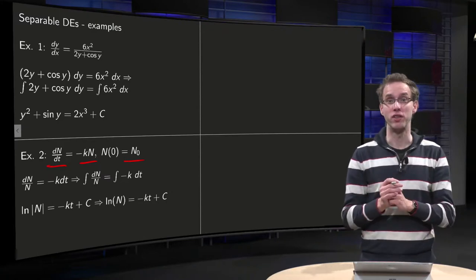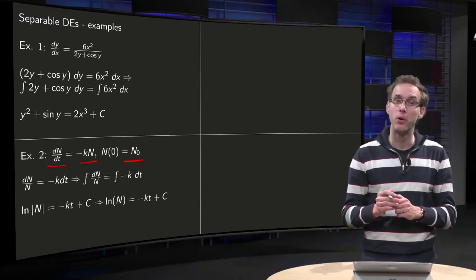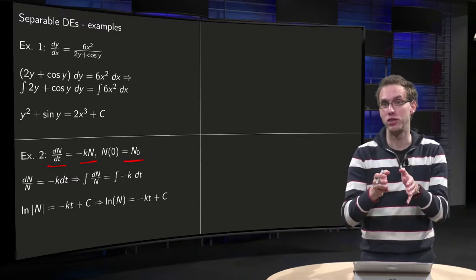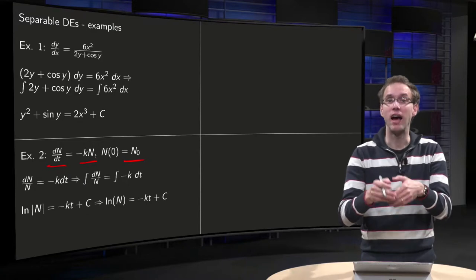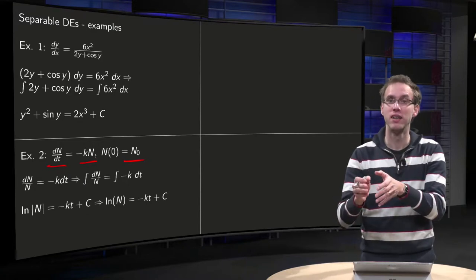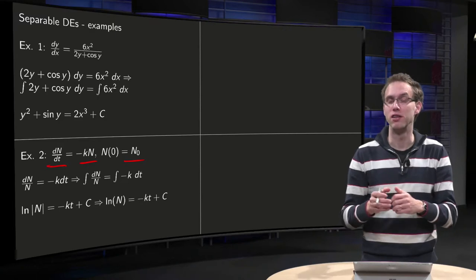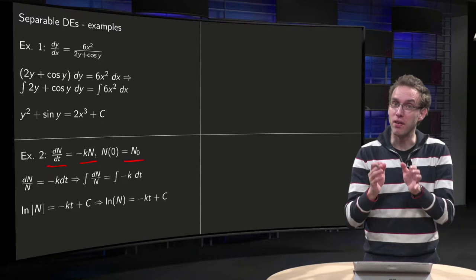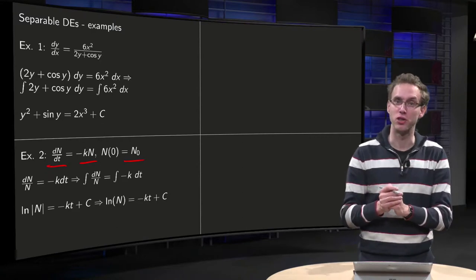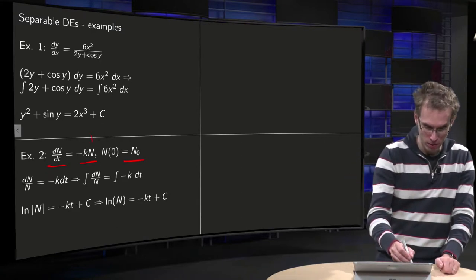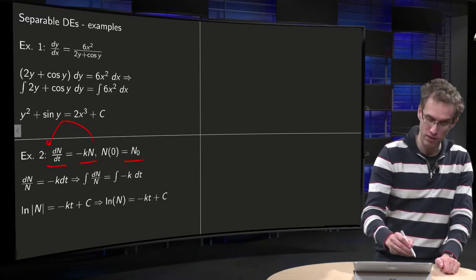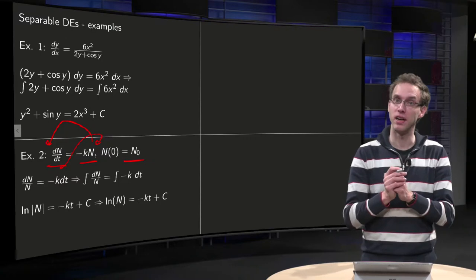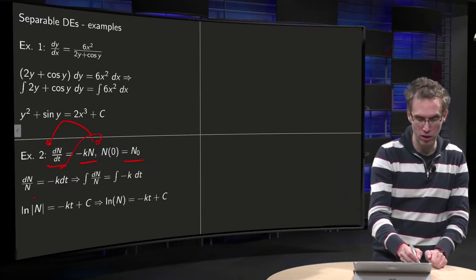So how do we solve this differential equation? Well, we see that on the right-hand side, you have a product of a function n, which depends on n, and a function minus k, which can be viewed as a function of t. A very easy function of t, because it is just a constant. So we have a separable differential equation, so we can separate it. We bring all n's to the left-hand side and all t's to the right-hand side. So we get 1 over n dn equals minus k times dt.